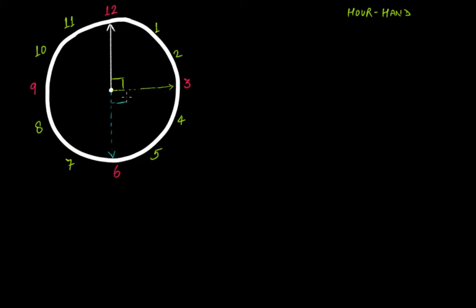This is also a right angle. It takes another turn and reaches nine. Let me use a different color. It takes another angle and reaches back to twelve — a complete angle. So a complete angle is four right angles, as we saw here.